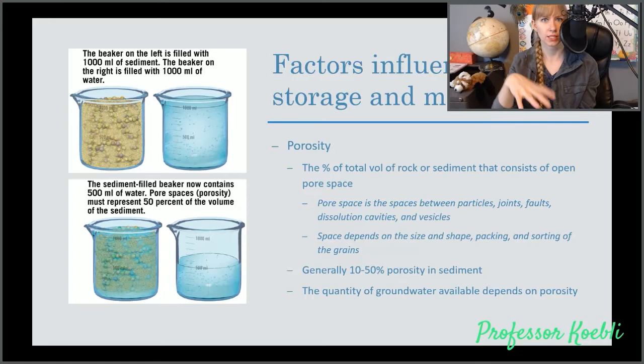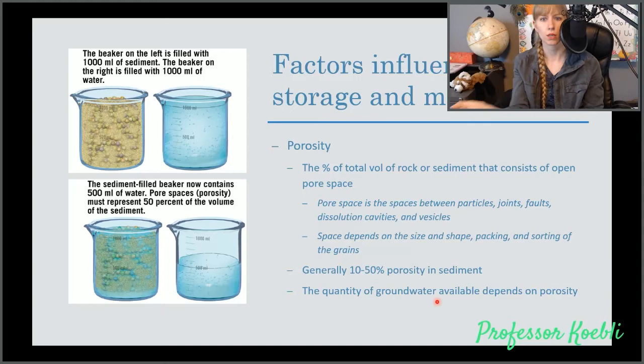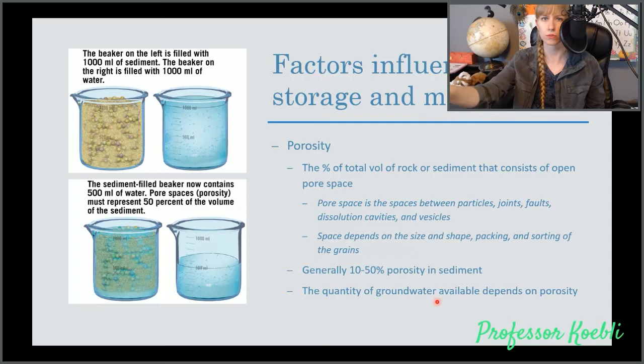Pore space is made up of the spaces between rocks or sand grains, joints in rock, faults in rock, dissolution cavities, which is where parts of the rock has been eroded away, and vesicles, which if you remember from the first part when we talked about volcanoes, vesicles are the air bubbles in rocks like scoria and pumice. The space depends on the size and shape and packing and sorting of the grains. Is it sorted? Is it not sorted? A sorted material, you'll have maybe more pore space on top and a little less as it goes down.